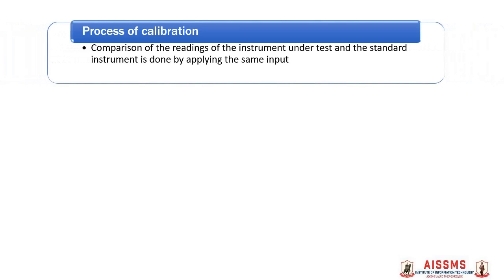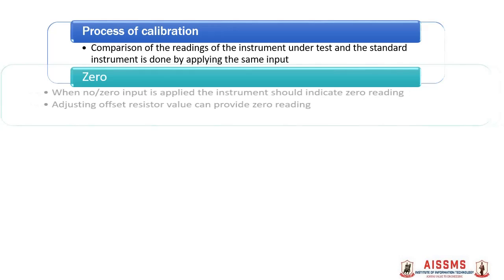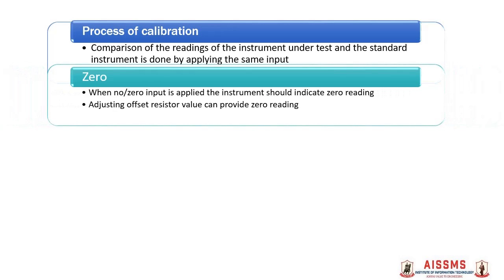Calibration is simply the comparison of the readings of the instrument under test and the standard instrument by applying the same input. When there is zero input applied to the instrument, the instrument under test should indicate zero reading. If it is not showing the zero reading, we need to adjust the offset resistor value to get the zero reading. This is called zero adjustment.